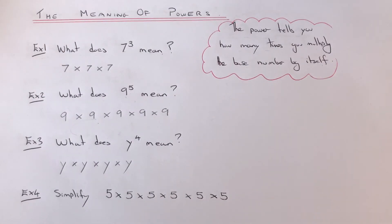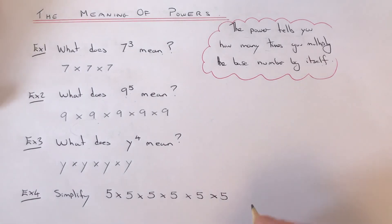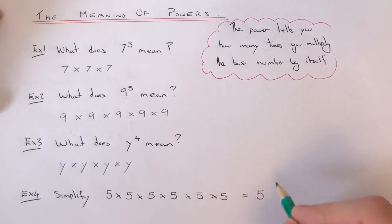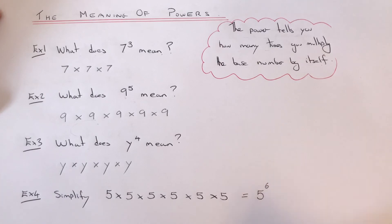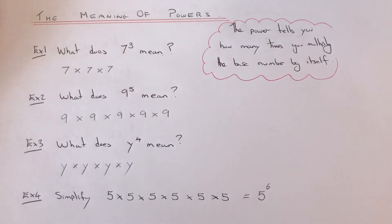Our final example — we need to simplify five times five times five times five times five times five. We've got six fives being multiplied, so our base number will be five and it's been multiplied by itself six times. That's our final answer.